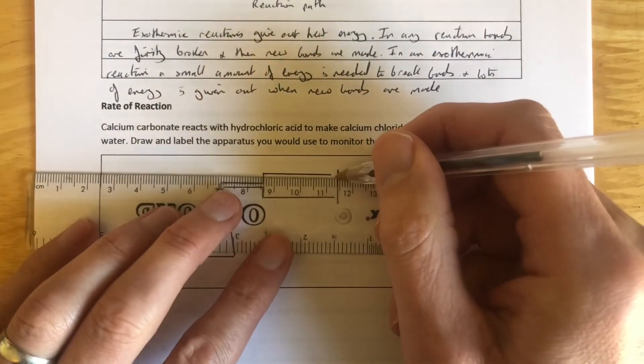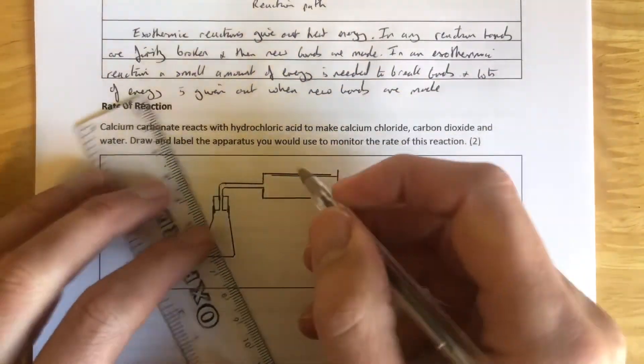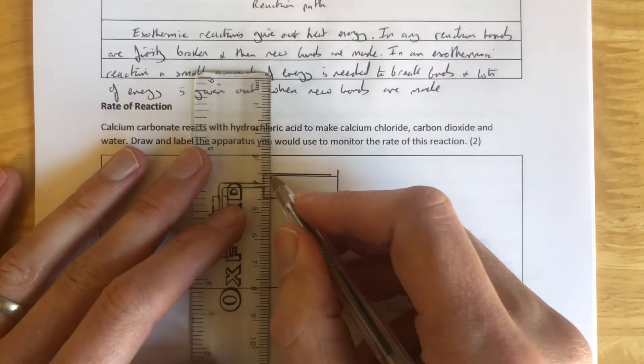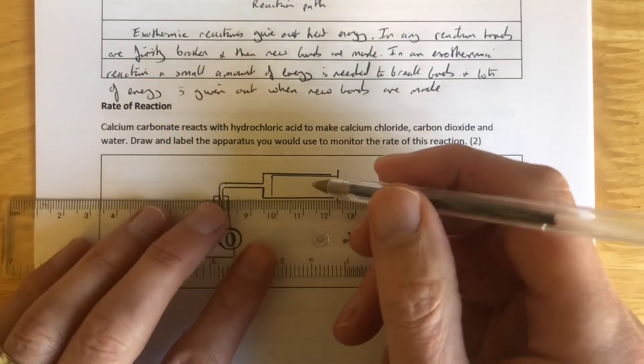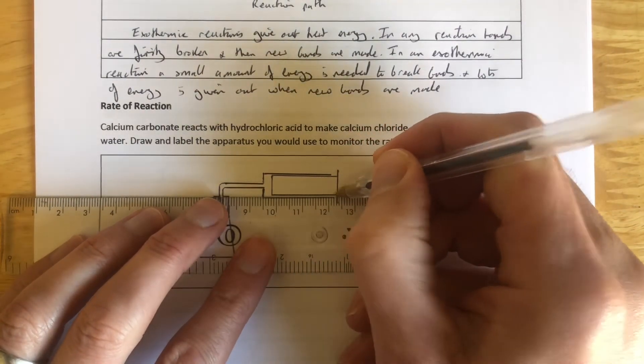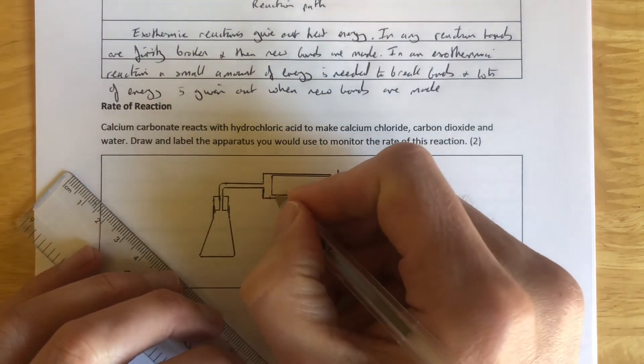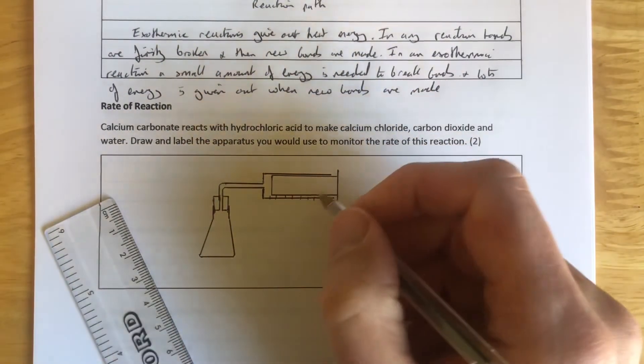It's just at the start of this experiment it's going to be empty, and as the gas is given off, it's going to push the plunger out. Now on the side of the syringe body, there are measurements all the way along it, so we can measure how much gas is given off every 30 seconds or so.